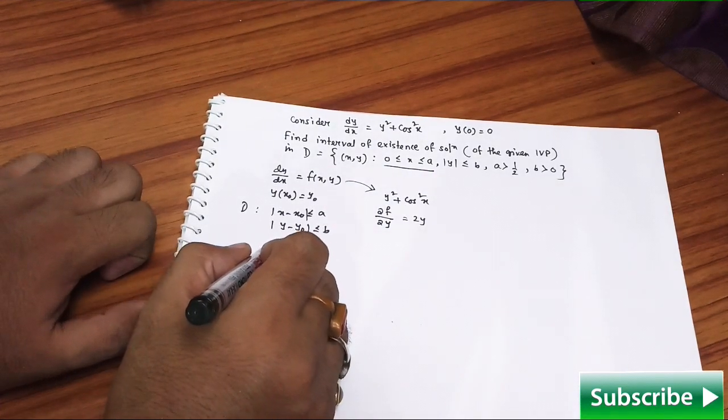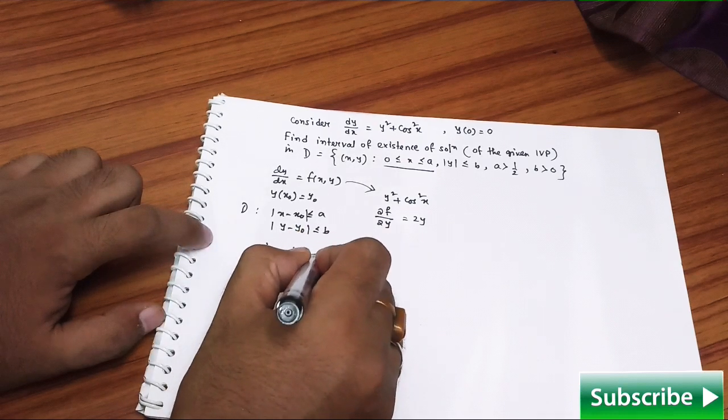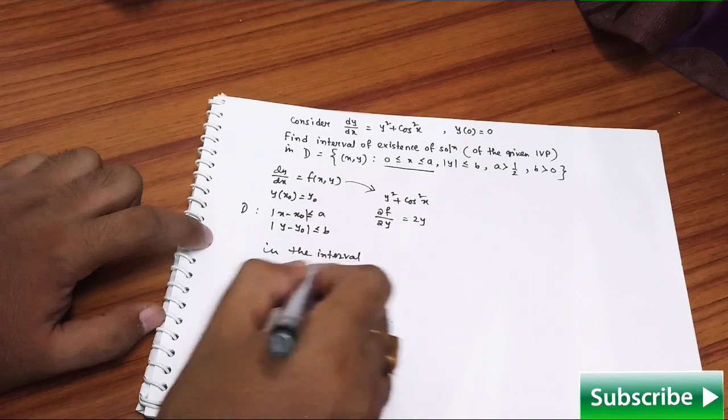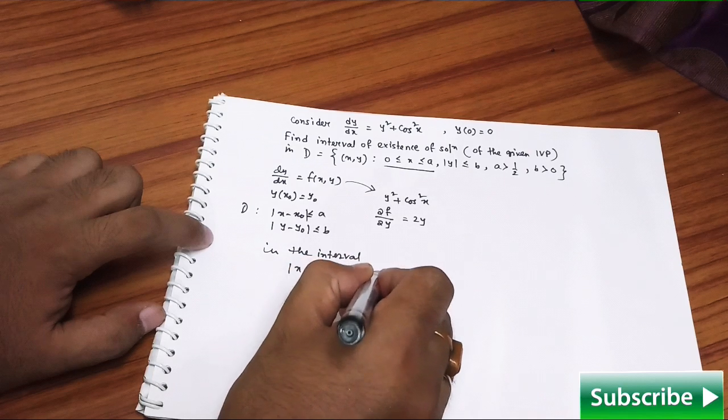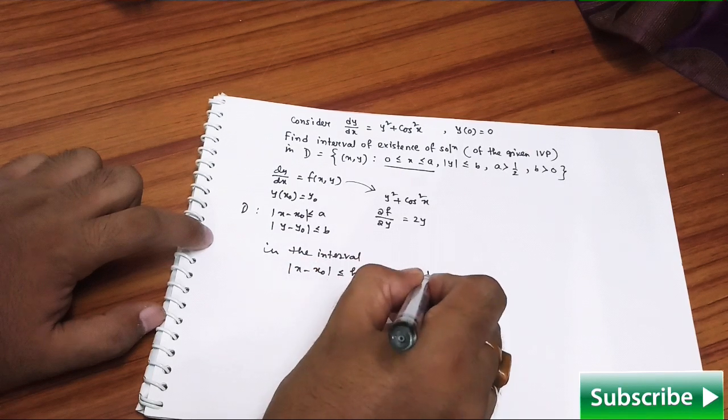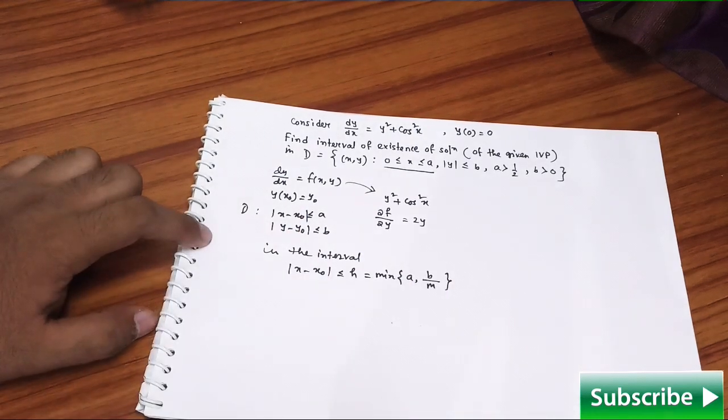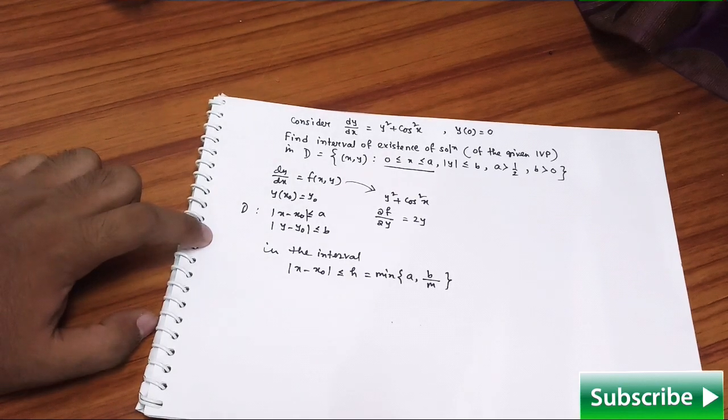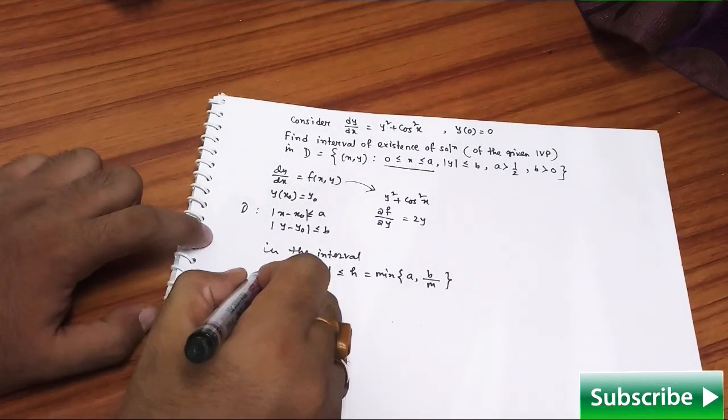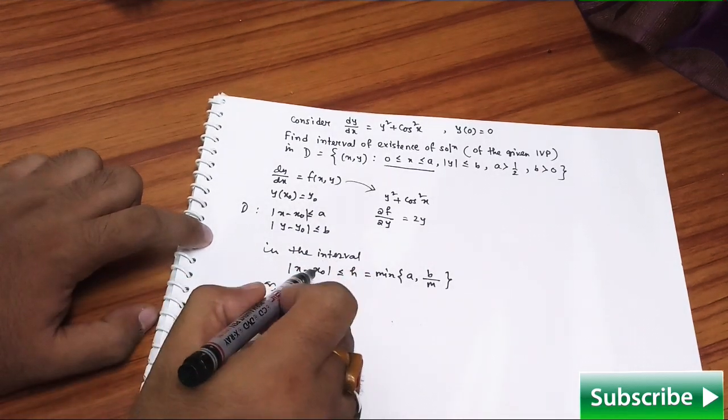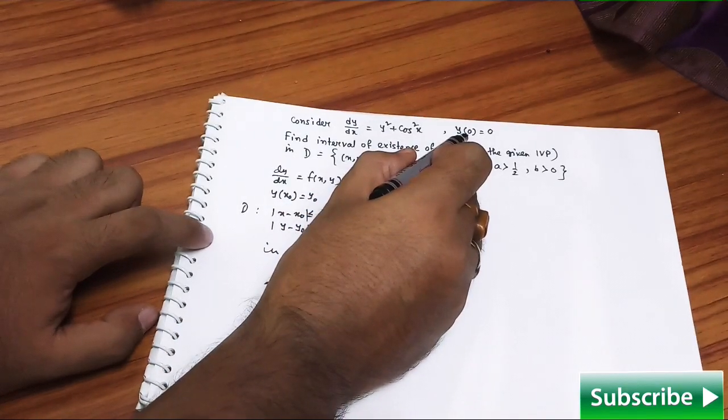Now we can proceed further. That means the solution will exist in the interval, and what is the interval? It is |x - x₀| ≤ h, where h is given by minimum of a, b/m. This m is the maximum of that given function or the maximum value of that given function in the domain.